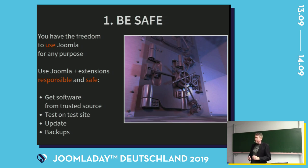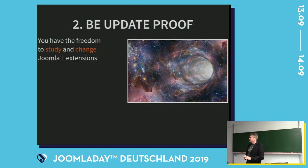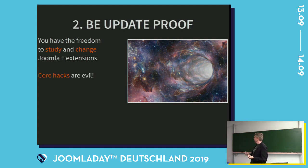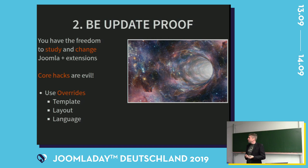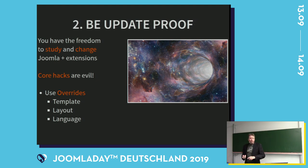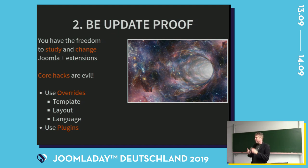The second principle is be update-proof. You can change Joomla and its extensions, however, core hacks are evil. If you change things in the core of extensions or of Joomla, you might lose them when you update. So you should use overrides — template overrides, alternative template overrides, layout overrides, and language overrides. You can also use plugins to change a lot of things; they're really powerful. Tomorrow I'll do a presentation about how Joomla works under the hood.